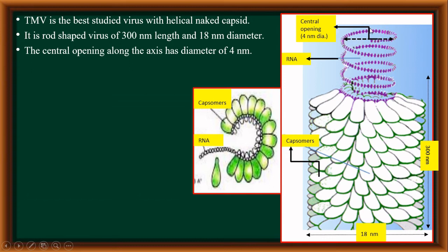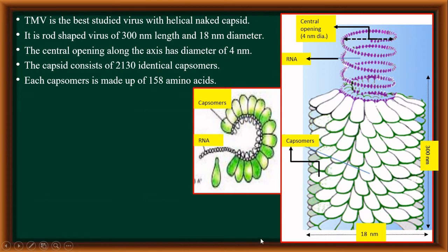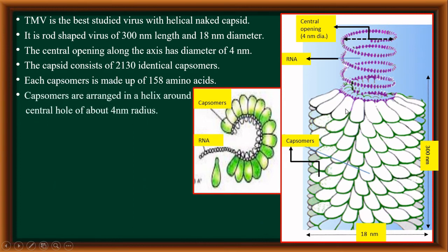The capsid is made of subunits called capsomers, and there are about 2130 identical capsomers in the intact structure of the virus. Each capsomer is made of 158 amino acids. These capsomers are arranged in a helix, or in a helical manner, around a central hole or spring-like or coil-like RNA.